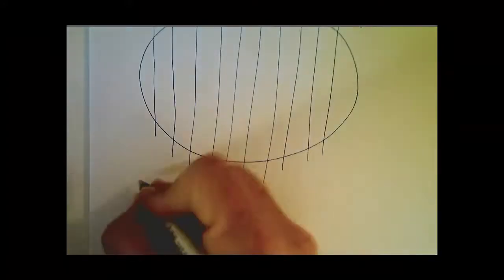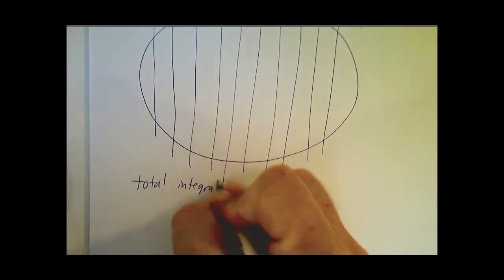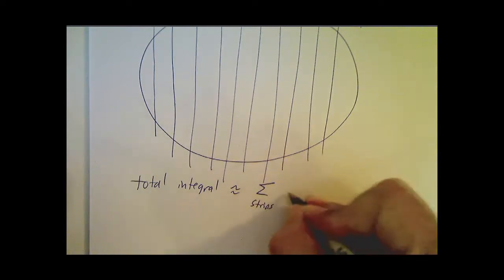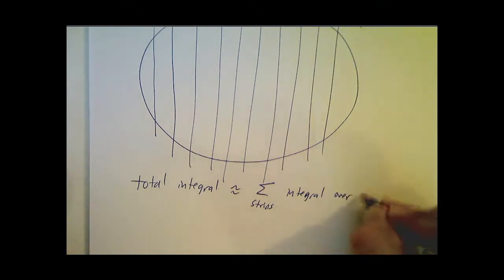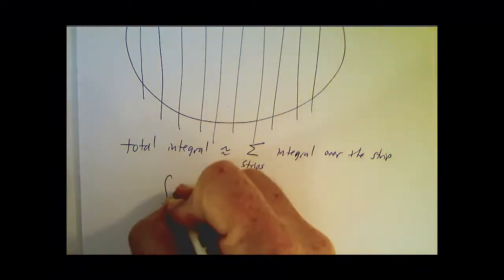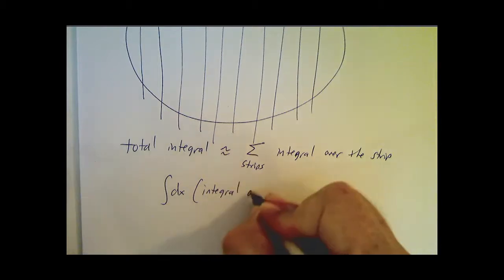So we get that the total integral is basically the sum over all the strips of the integral over the strip. So that's going to be an integral with respect to x of the integral over the strip.